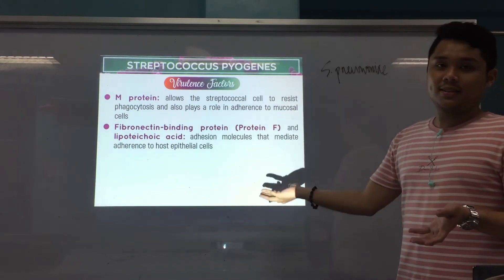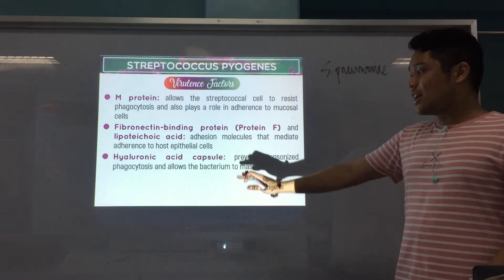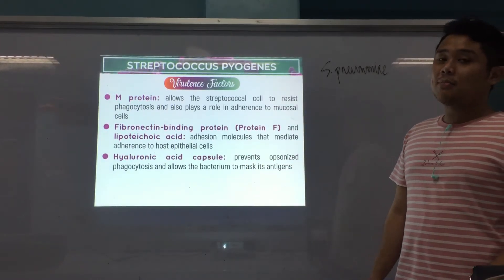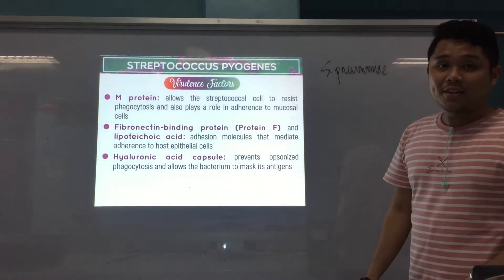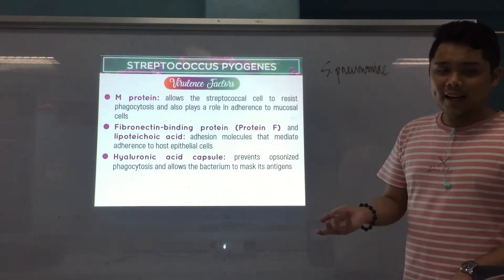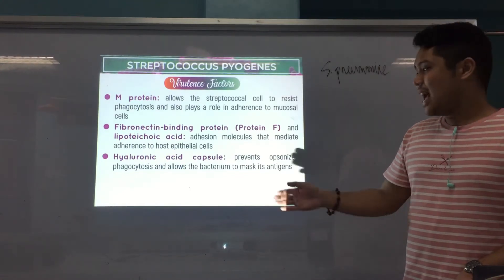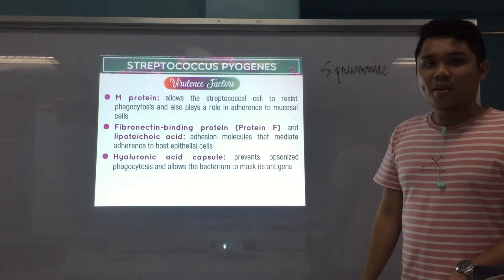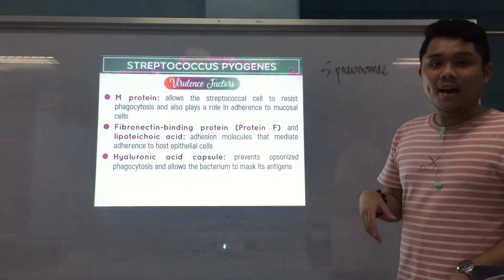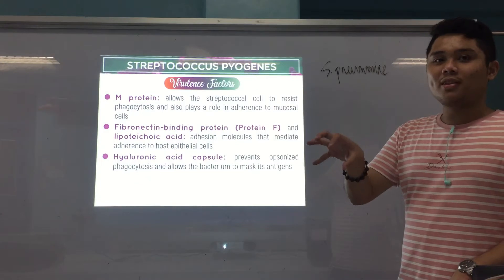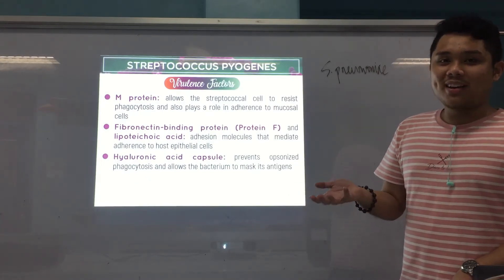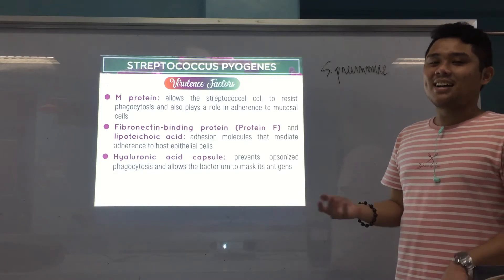The hyaluronic acid capsule prevents opsonized phagocytosis and allows the bacterium to mask its antigens — so the bacteria cannot be destroyed by phagocytes, and the immune system cannot detect them because the antigens are hidden. This prevents immune cells from signaling the presence of a foreign antigen.